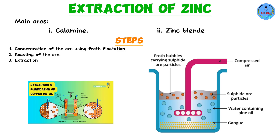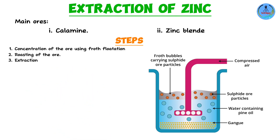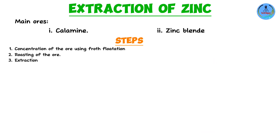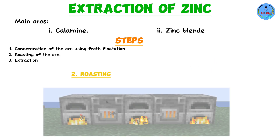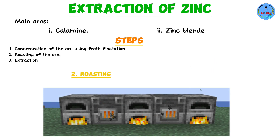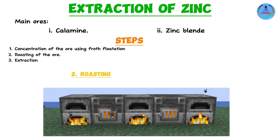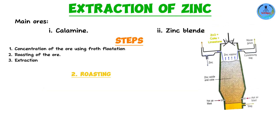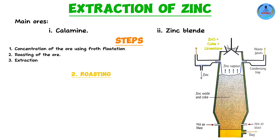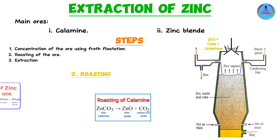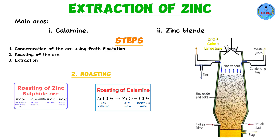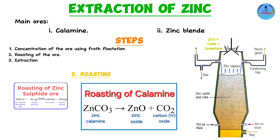After the impurities have been reduced, we move on to roasting. Roasting is a process whereby you heat a substance in the presence of air under very high temperatures, occurring within a furnace. Let's consider both calamine and zinc blende.